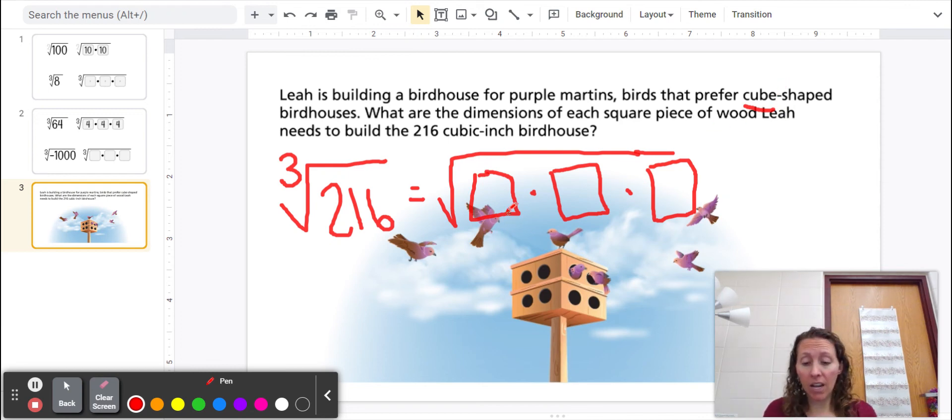I'm going to start with the number 8. I'm just going to grab my calculator here, and I'm going to do 8 times 8 times 8. That equals 512. That number is too big.